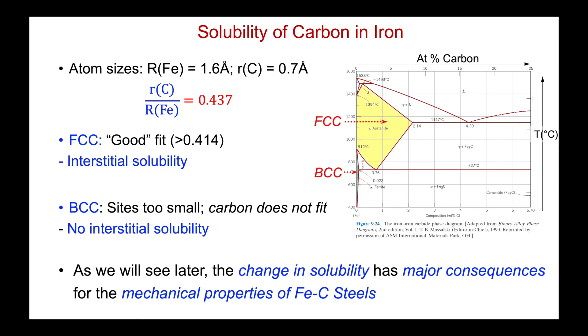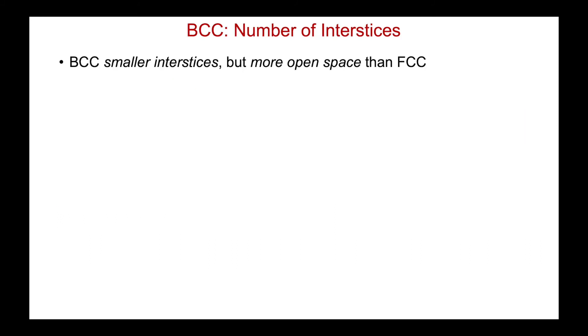As we'll see later, this has major ramifications for the mechanical properties of iron carbon steels. Well, we know the BCC structure has more open space. And yet the interstitial solubility are smaller than the FCC structures. How do we reconcile this difference?